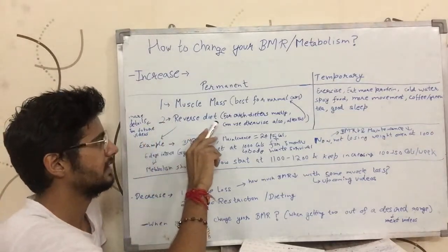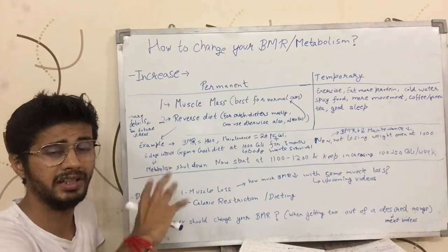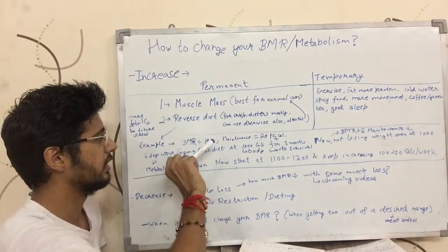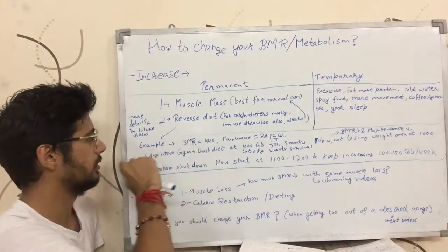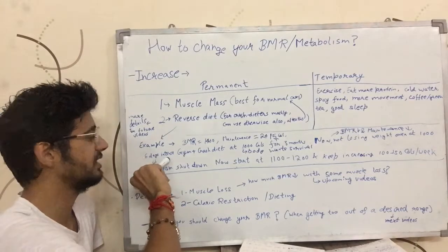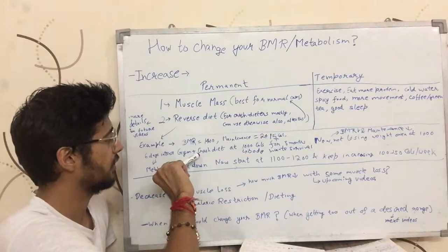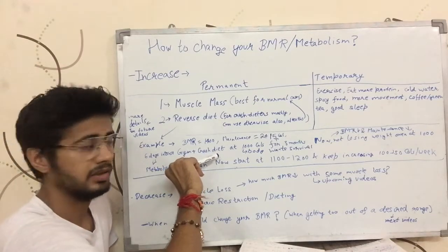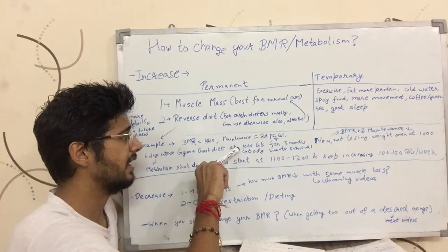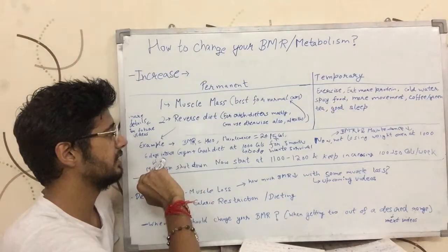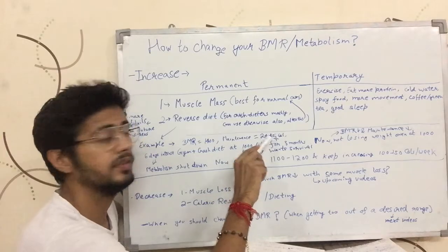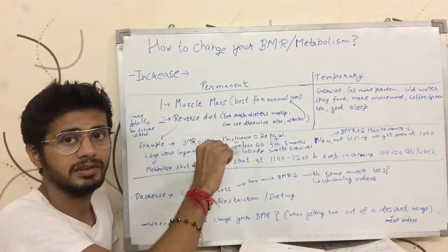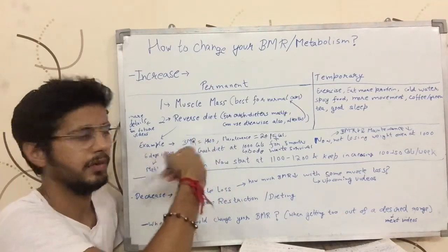The second permanent way is reverse dieting. I will explain it in detail in future videos, but for now I will explain it briefly. Let's say there is a lady with a BMR of 1400 calories and she thinks she is too fat. So she starts going to the gym six days a week doing intense workouts, and she also decides to eat a lot less than she should — she crash diets. With a BMR of 1400 and working out six days a week, her maintenance is 2415 calories, multiplying 1400 by 1.725. That is how we calculate maintenance calories.